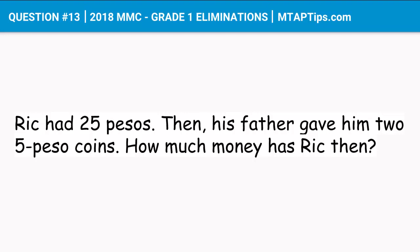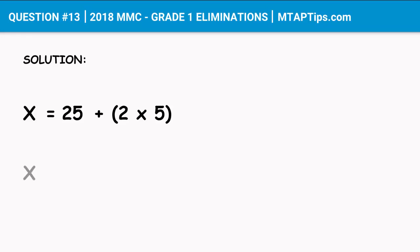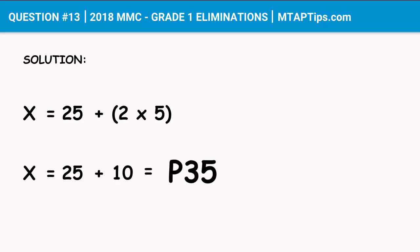Let's go ahead and try to solve this problem. Let's make x the unknown number, so x is equal to 25, which is the original amount that Rick had, plus 2 times 5, which is the two 5-peso coins that his father gave. So we get x is equal to 25 plus 10, and we get 35.